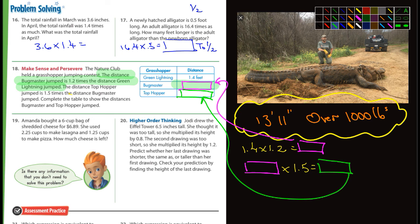19. What are we doing in 19 here? Amanda bought a six cup bag of shredded cheese for $6.89. She used 2.2 cups to make lasagna and 1.2 cups to make pizza. How much cheese is left? That's easy. What are we doing here? First off, they gave us some information that's unnecessary. Price doesn't matter. We're not talking about price. We're talking about how much cheese is left. Quantity. And she used 2.25, and then she used 1.25. And then you're going to get an answer, and then you're going to subtract that answer from 6 cups. From 6.00, you're going to subtract what your answer is, and then you'll get, then your final answer is how much cheese is left.